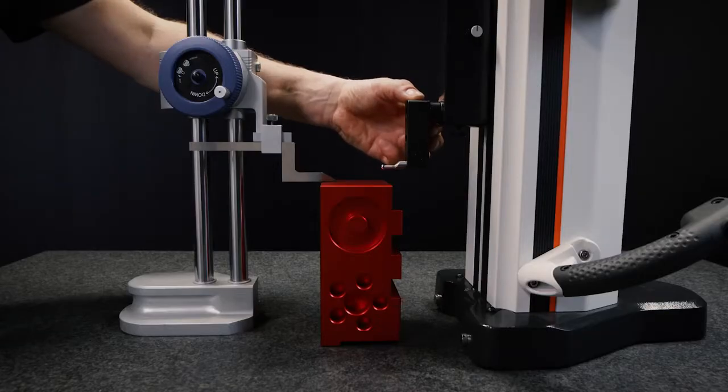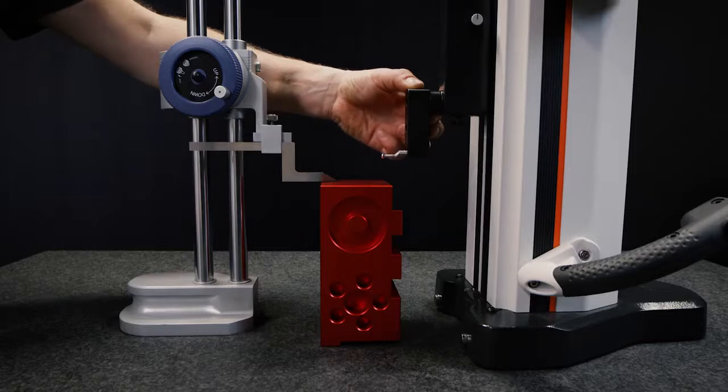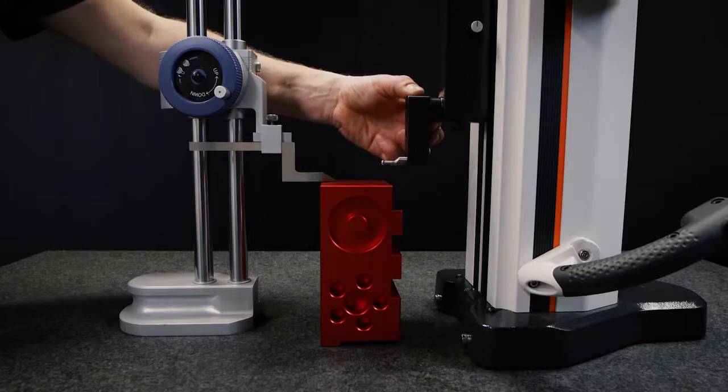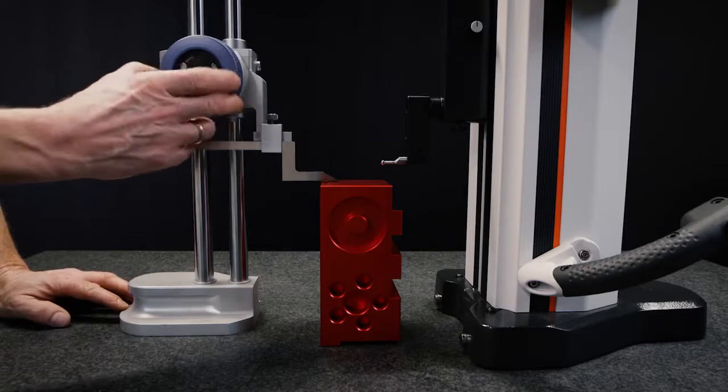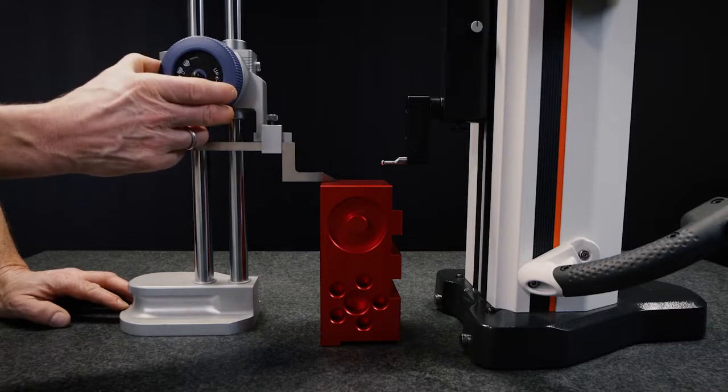While some height gauges with measuring stylus are equipped with a spring-loaded stylus or probe holder to control the measuring force, an ordinary height gauge using a scriber has no device to control the measurement force.